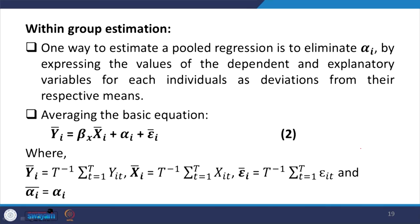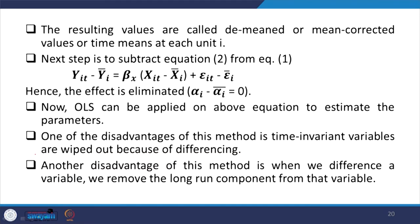Averaging the basic equation Y_it gives: Ȳ_i = α_i + β X̄_i + ε̄_i. Here alpha_i remains as a constant since it does not vary over time, and the epsilon term is averaged over time. The resulting values are called demeaned or mean-corrected values — time means at each unit i have been taken. The next step is to subtract the original model from the average transformed model.